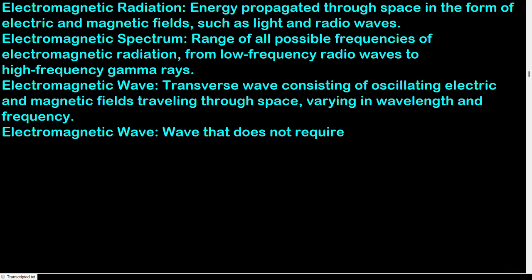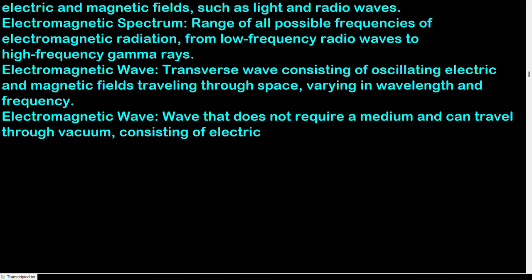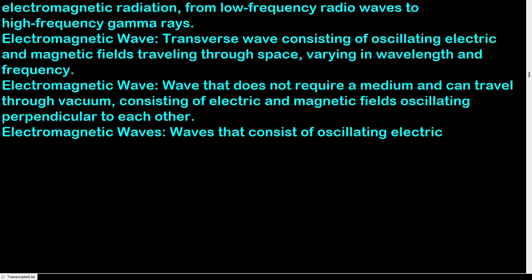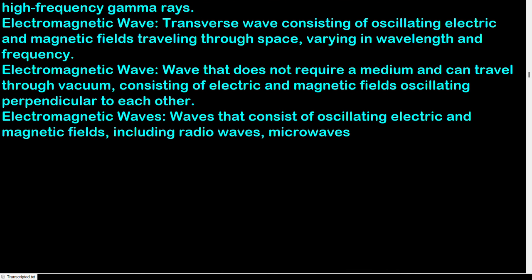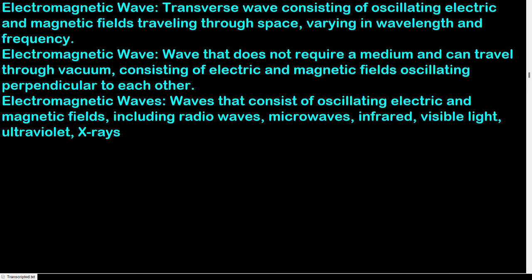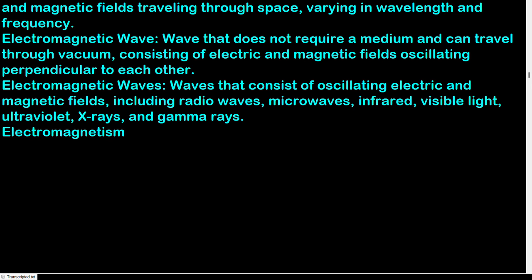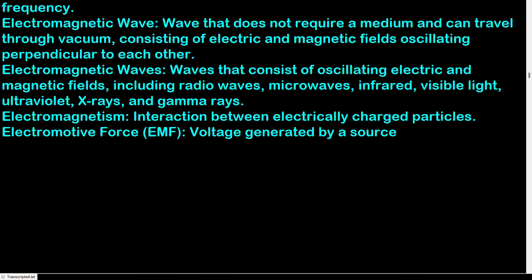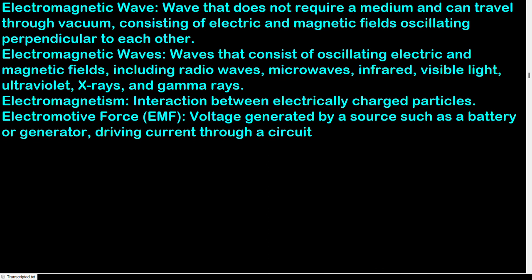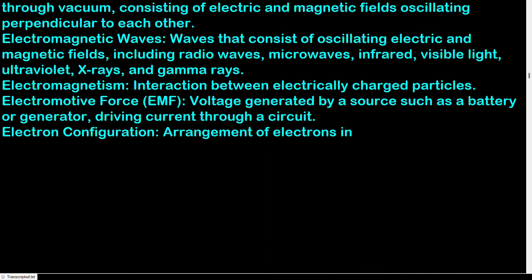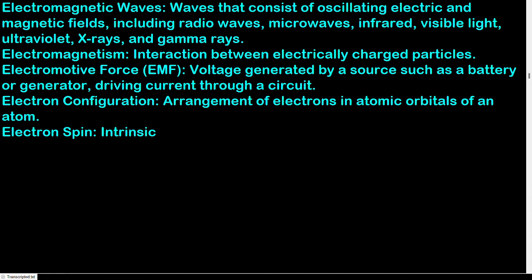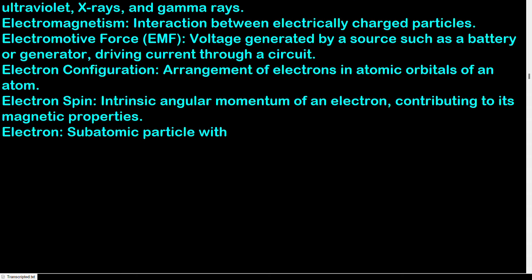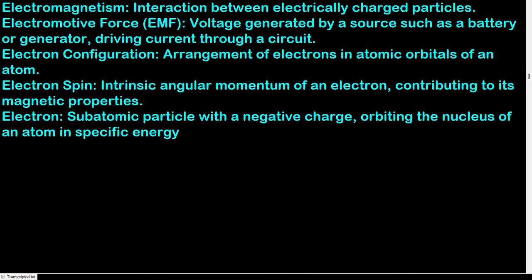Electromagnetic wave: transverse wave consisting of oscillating electric and magnetic fields traveling through space, not requiring a medium — including radio waves, microwaves, infrared, visible light, ultraviolet, X-rays, and gamma rays. Electromagnetism: interaction between electrically charged particles. Electromotive force (EMF): voltage generated by a source such as a battery or generator, driving current through a circuit. Electron configuration: arrangement of electrons in atomic orbitals of an atom. Electron spin: intrinsic angular momentum of an electron, contributing to its magnetic properties. Electron: subatomic particle with a negative charge, orbiting the nucleus in specific energy levels.